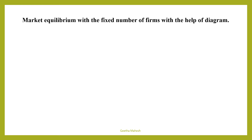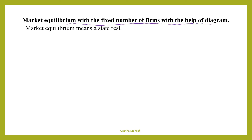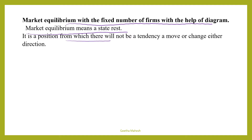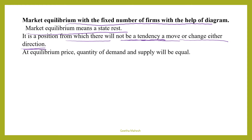Now let us understand market equilibrium with a fixed number of firms with the help of a diagram. Under perfect competition there will be free entry and exit, but here we assume the number of firms in the market is fixed. Market equilibrium means a state of rest — a position from which there is no tendency of movement or change in either direction. It is a position where both players do not want to move. That position we call it as market equilibrium.